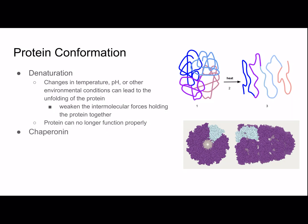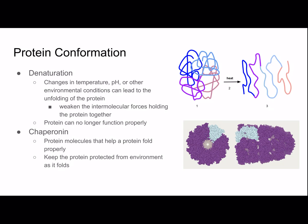A chaperonin is a protein molecule that helps a protein fold properly. It keeps the protein protected from the environment as it folds. Basically it'll open up, the protein will go inside, the chaperonin will close and the protein will fold. When it's done, it'll open and the protein can go and do its job.